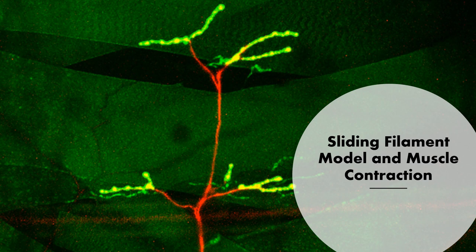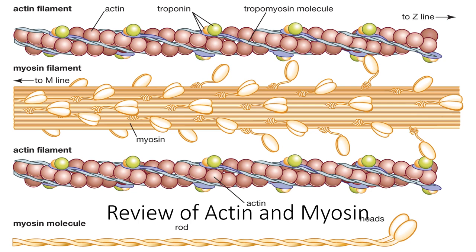We're now going to move on to the sliding filament model and muscle contraction. We're going to talk about how actin and myosin are going to interact with each other and cause a muscle contraction. We will also talk about how a motor neuron will initiate the contraction. Before we get started, I want to do a little review of actin and myosin, because you really need to know what are the players in the sliding filament model.